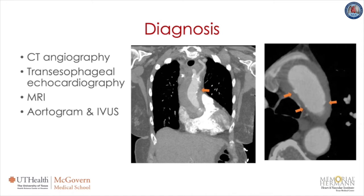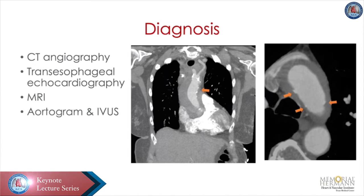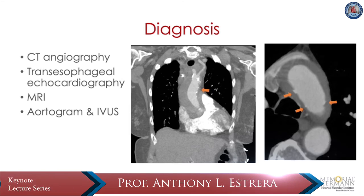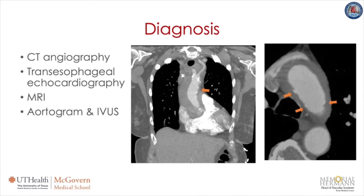Diagnosis of acute type A IMH and other acute aortic syndromes relies on clinical presentation and imaging. There are no currently reliable biomarkers available to provide an accurate diagnosis of any of these syndromes. EKG is usually obtained as part of the chest pain workup to rule out coronary ischemia. CT angiography is the diagnostic imaging modality of choice in hemodynamically stable patients — it is highly sensitive and specific for identifying aortic pathology. If the CTA is non-diagnostic or equivocal, or the patient is hemodynamically unstable, a transesophageal echocardiogram may be useful to confirm and support the diagnosis. TEE is also very sensitive and highly specific, and can identify pericardial effusion or tamponade, aortic valve regurgitation, or wall motion abnormalities.